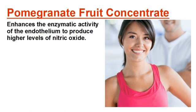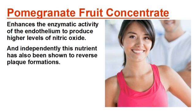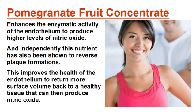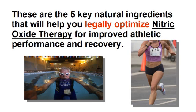The final key ingredient is pomegranate fruit concentrate, because it enhances the enzymatic activity of the endothelium to produce higher levels of nitric oxide. And independently, this nutrient has also been shown to reverse plaque formations, which improves the health of the endothelium to return more surface volume back to a healthy tissue that can then produce nitric oxide. These are the five key natural ingredients that will help you legally optimize nitric oxide therapy for improved athletic performance and recovery.